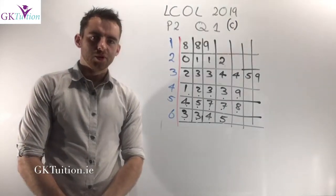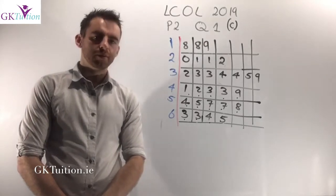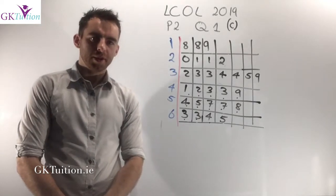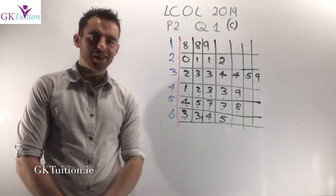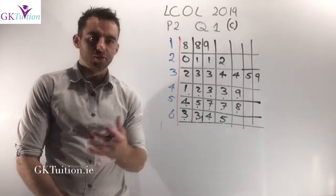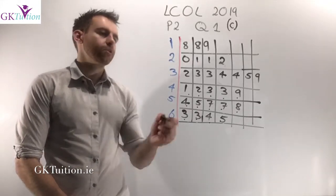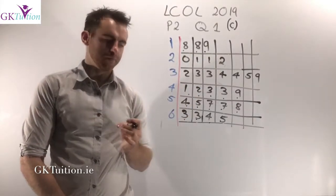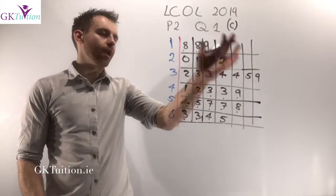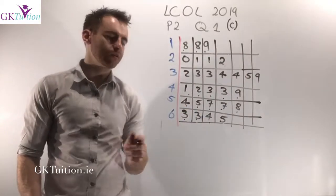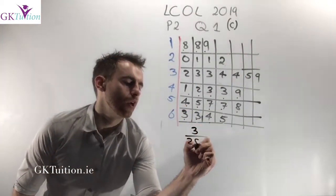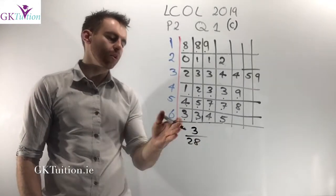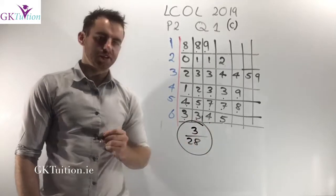Okay in part C we're told that in a certain day all of the employees are at work and that if an employee is chosen at random what is the probability that the employee chosen is a teenager? And a teenager is referred to as anyone under the age of 20. So you need to realize that there are one, two, three teenagers in this company. So if I was to randomly select one person from this group the probability that I select a teenager would be just 3 over 28. There's 28 employees in total and three of them are teenagers so my probability is just that.